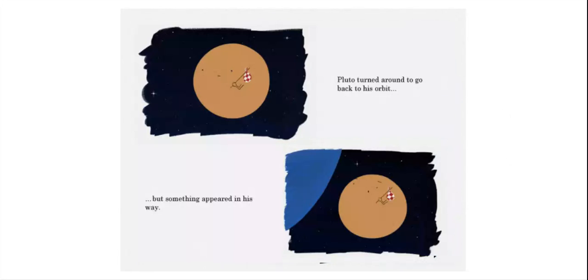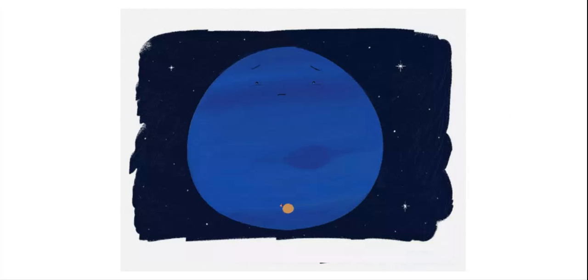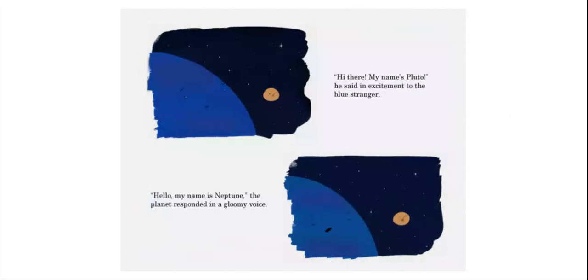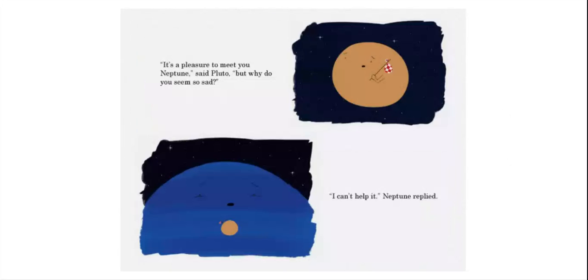Pluto turned around to go back to his orbit, but something appeared in his way. Hi there, my name is Pluto, he said in excitement to the blue stranger. Hello, my name is Neptune, the planet responded. It's a pleasure to meet you, Neptune, said Pluto, but why do you seem so sad?